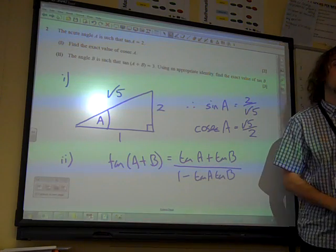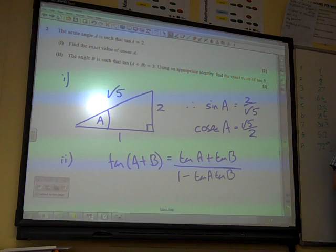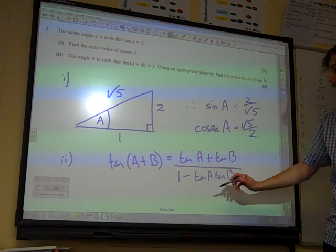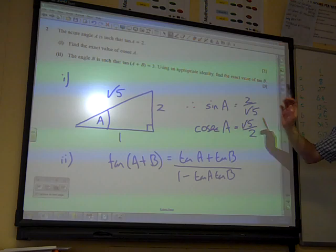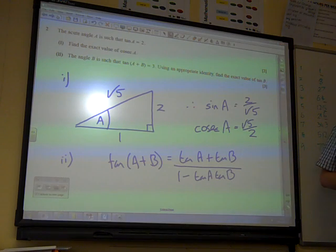That's there in the formula booklet along with sin(A + B) and cos(A + B). So we just need to fill in the gaps with this. We know what tan(A + B) is. We know what tan A is.